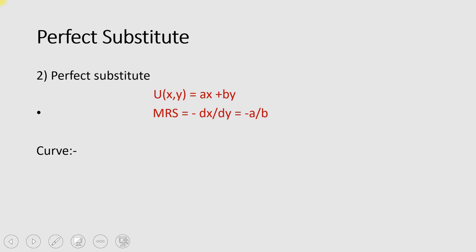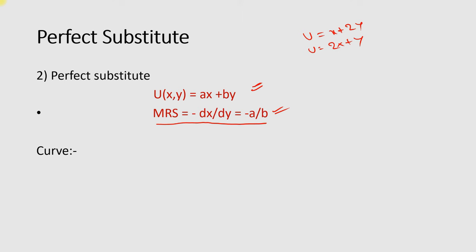Next we have the perfect substitute utility function, which is usually represented in this general form. For example, it can be in the form of x plus 2y, or 2x plus y, and so on. The marginal rate of substitution for a perfect substitute utility function is found using the same formula as in the Cobb-Douglas case, and this can be used as a shortcut whenever you have been given a perfect substitute utility function of this form.